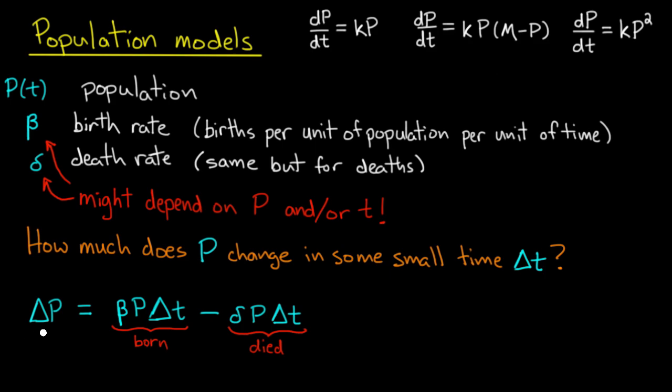Now it's easy to see that ΔP will simply be the number of units of population born in that small amount of time, Δt, minus the number of units of population that die in that small interval of time. And by the definitions of birth rate and death rate, beta and delta, the number of units of population born is beta times P times Δt.